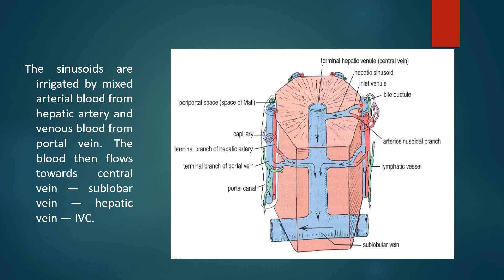The oxygenated and deoxygenated blood are mixed in the sinusoids, and this mixed blood then bathes the hepatocytes. From the sinusoids, blood enters the central vein, which is actually called the terminal hepatic venule. From the terminal hepatic venule, blood enters the sublobular vein, which drains into the right and left hepatic veins and then into the inferior vena cava.